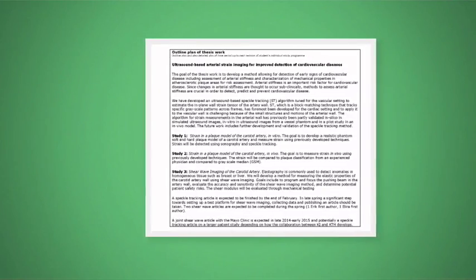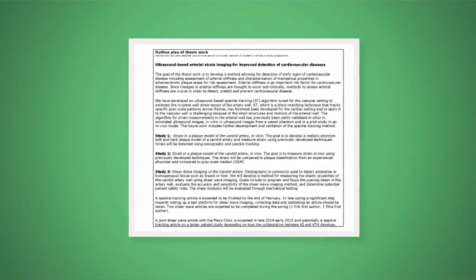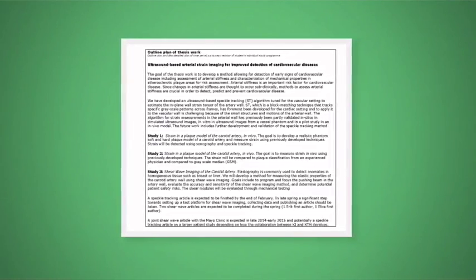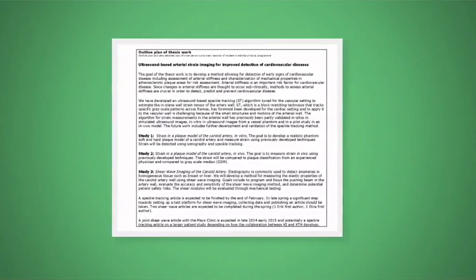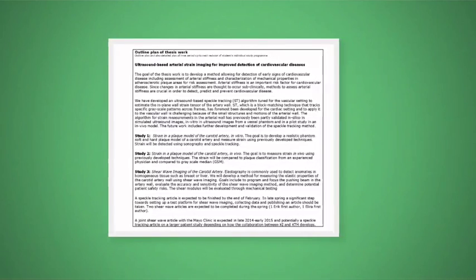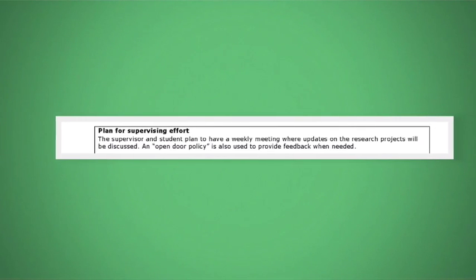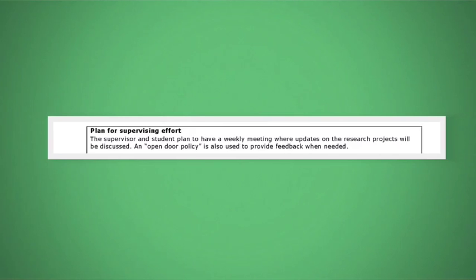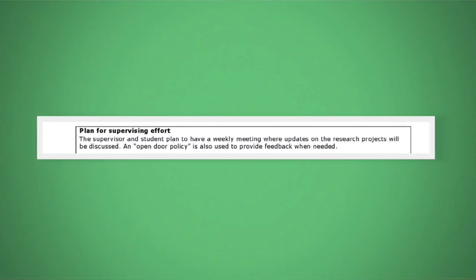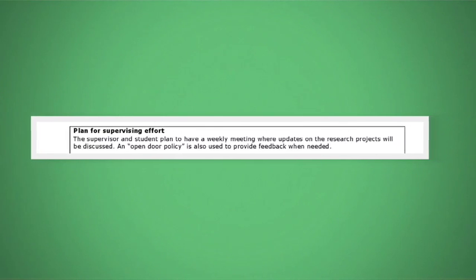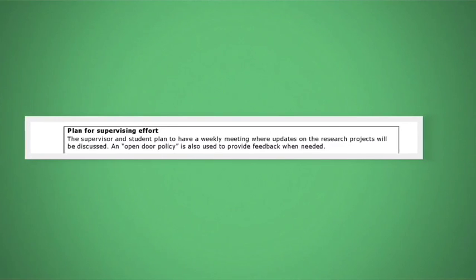Next is an outline of your planned thesis work. It's important to write this section with your advisor to make sure that you're on the same page. Remember, the ISP is a living document, so this section will change often. This is followed by the plan for supervision between you and your advisor. Some students prefer an open door policy, while others prefer weekly meetings. It's up to you and your advisor to determine what works best for you.